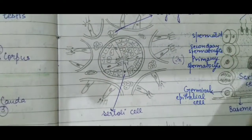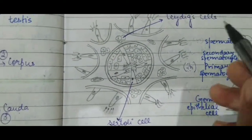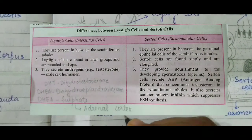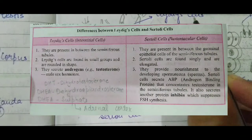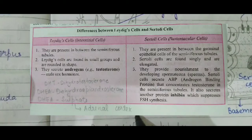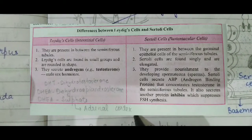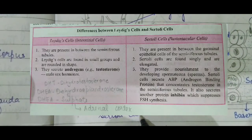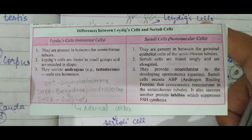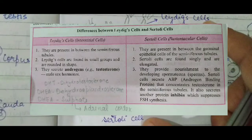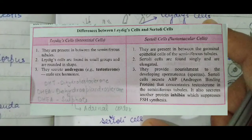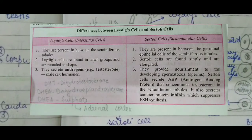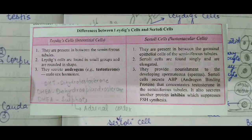These are the basic differences between Leydig cells and Sertoli cells. Leydig cells are also called interstitial cells, and Sertoli cells are also called sustentacular cells. I hope the difference between Leydig and Sertoli cells is clear. If you liked this video, please like, subscribe, share, and comment. Thank you.